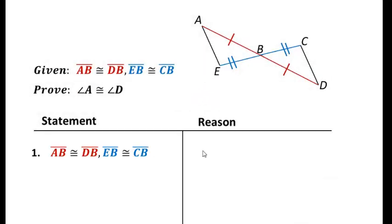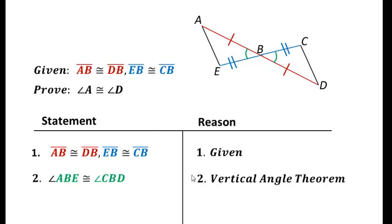Well first of all we need to put in our given information, and then we're specifically going to put that these vertical angles are congruent, and that would be the vertical angle theorem. Well now we have side, angle, side. So these triangles are congruent by side, angle, side.